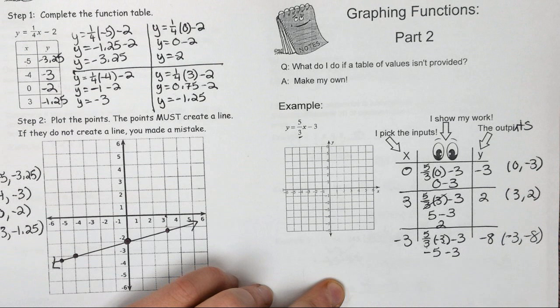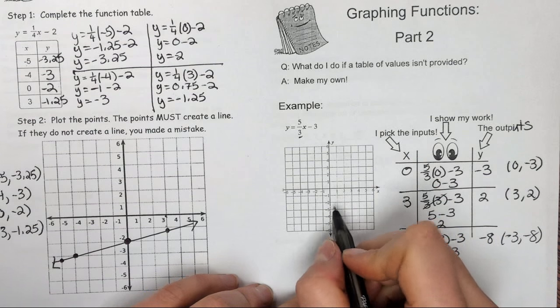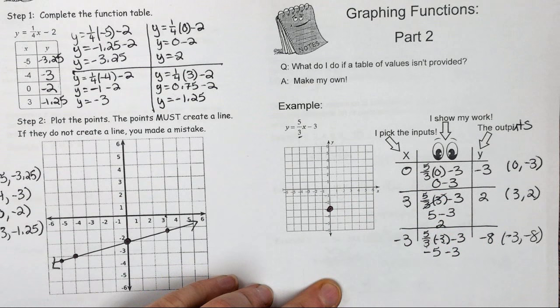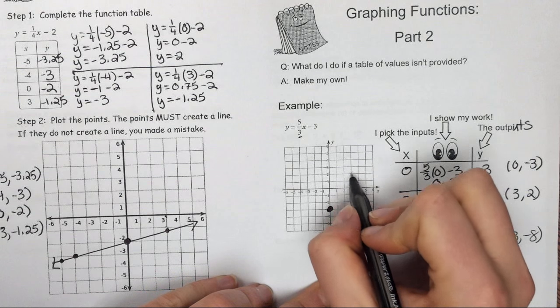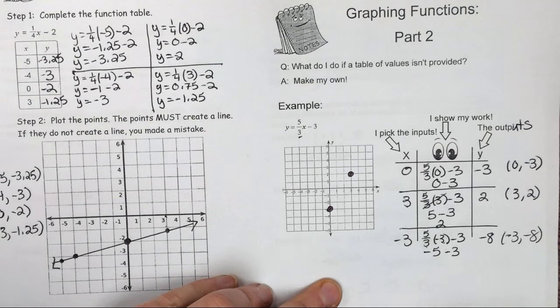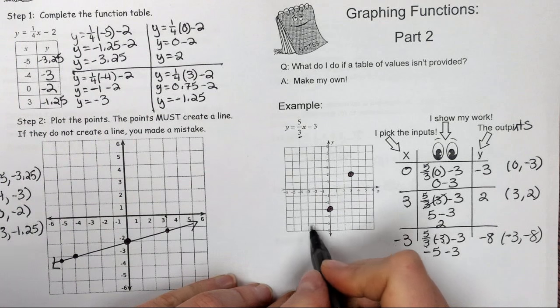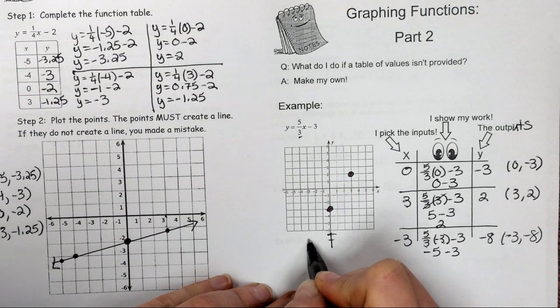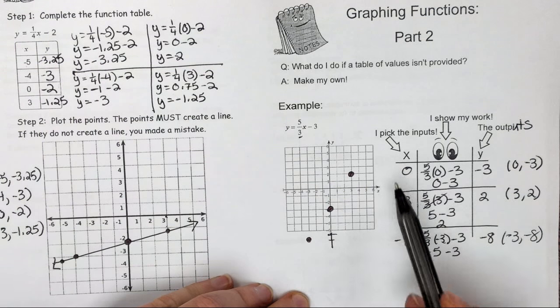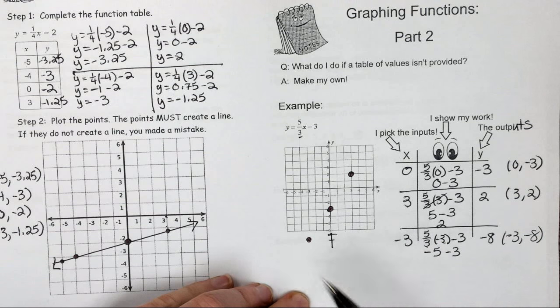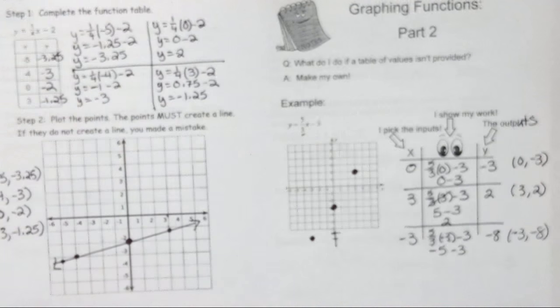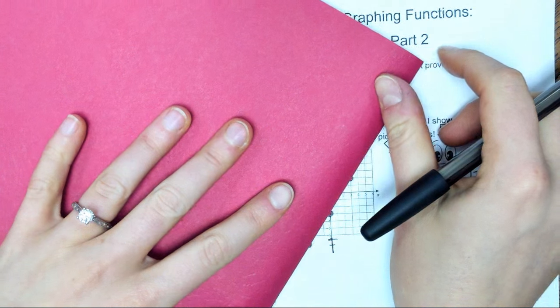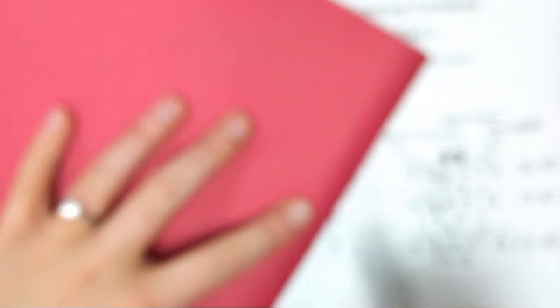Now I'll go ahead and plot those 3 points. 0, negative 3—so 0 left to right, down to negative 3. Over to 3, and then up to 2. And then negative 3 and negative 8. That goes off my graph a little bit, so I can extend my graph down to negative 8. Notice my 3 points form a line, so I probably did that right. Connect my points together, draw the arrows, and there you go.